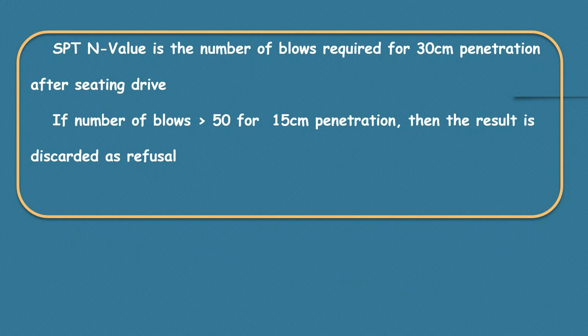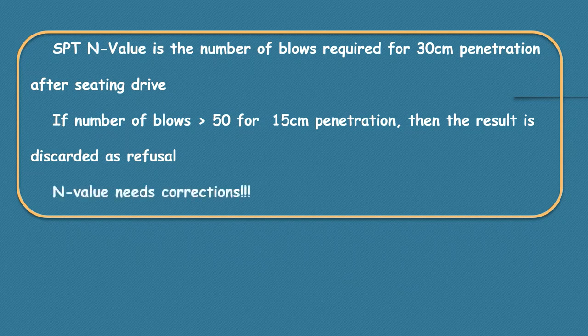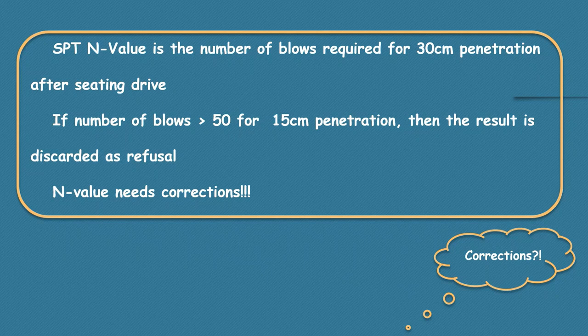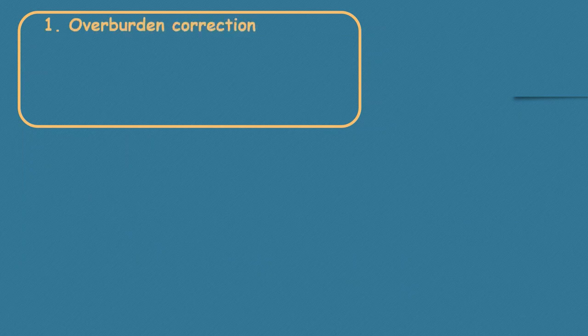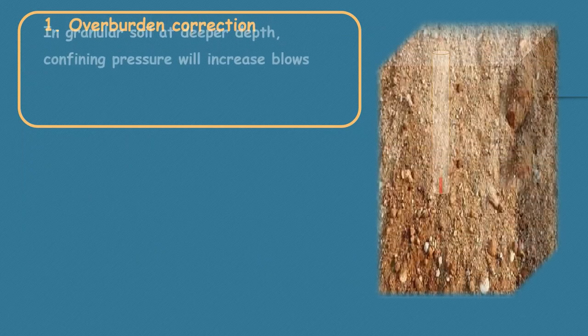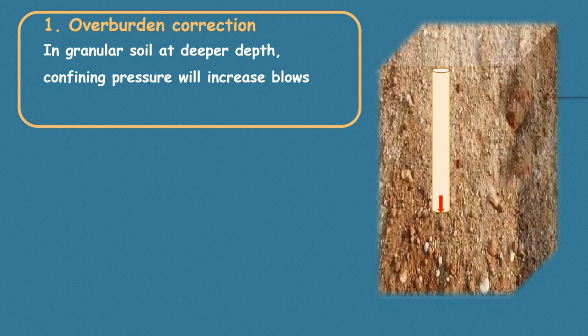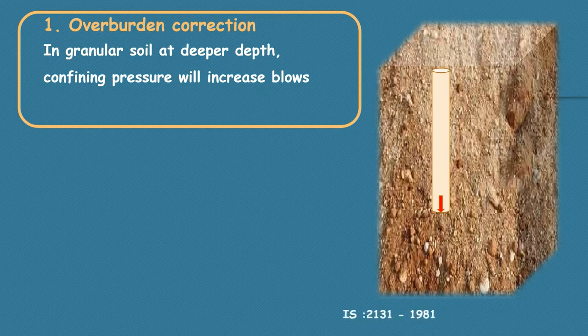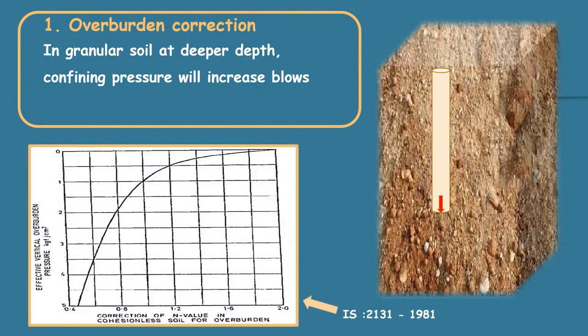Your recorded N value has a number of errors and hence needs corrections. But IS code recommends two corrections in particular, of which the first one is overburden correction. In granular soil at deeper depth, confining pressure will increase the blow count. Hence we may overestimate the strata at deeper depth. IS 2131-1981 recommends this graph for overburden correction.